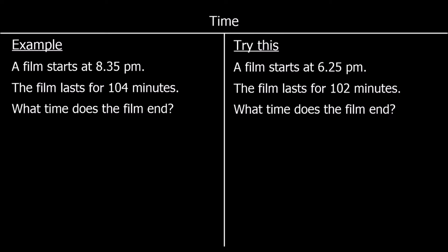OK, a time question. A film starts at 8.35pm. The film lasts for 104 minutes. What time does the film end? So we have to add 104 minutes on to 8.35. We need to know there are 60 minutes in an hour. If we're at 8.35, how many minutes to get to 9 o'clock?